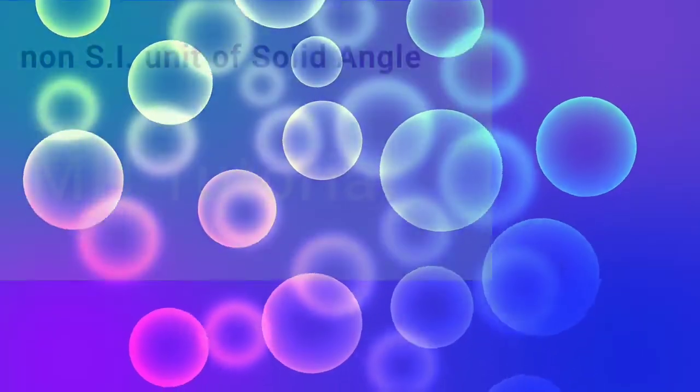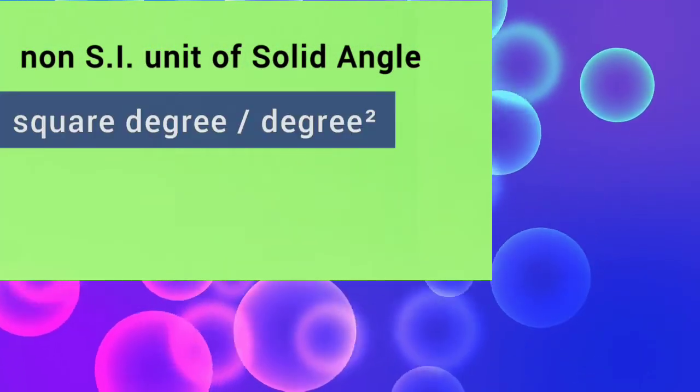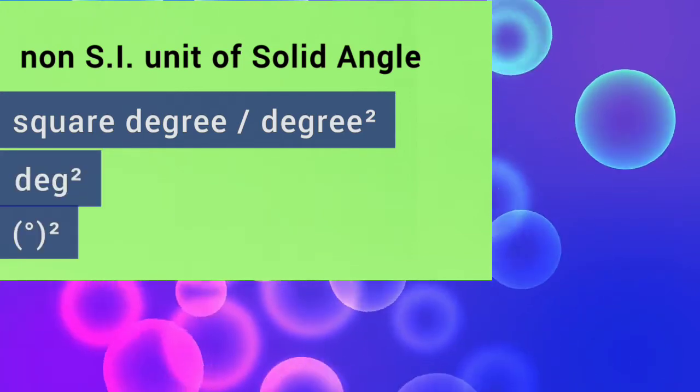Note that there is a non-SI unit of solid angle. It is called square degree or degree square, and symbolizes with deg² and denoted in bracket degree square.